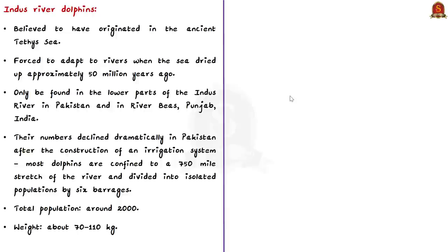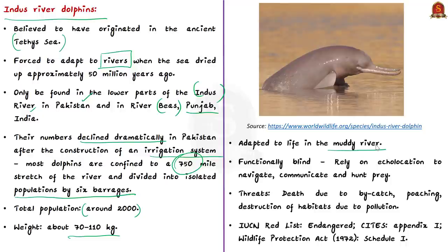First I am talking about Indus river dolphins. They are believed to have originated in the ancient Tethys sea. When the sea dried up approximately 50 million years ago, the dolphins were forced to adapt to its only remaining habitat that is rivers. Today they can be found in the lower parts of the Indus river in Pakistan and the river Beas which is a tributary of the Indus river in Punjab in India. In Pakistan their numbers declined dramatically after the construction of an irrigation system and most dolphins are confined to a 750 mile stretch of the river and they are divided into isolated populations by 6 barrages. The total population of the Indus river dolphins is estimated to be around 2000 and each of them weighs about 70 to 110 kilograms. They have adapted to life in the muddy river and their eyes are so small that scientists believe that they are functionally blind. They rely on echolocation to navigate, communicate and hunt their prey which includes prawns, catfish and carp.